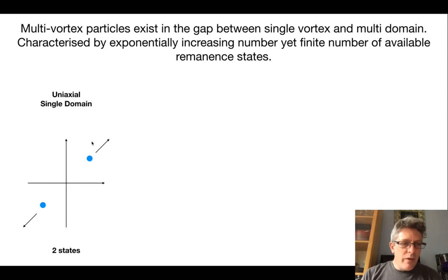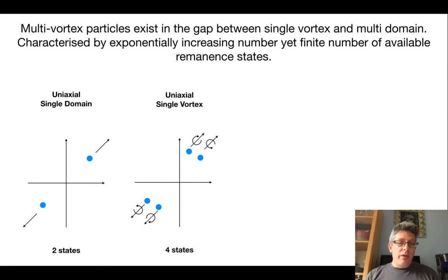In the simplistic case, if we have uniaxial single-domain, there are two remanent states that a particle can adopt, up or down. If we go to a uniaxial single-vortex state, that number of states might increase to four, corresponding to the vortex core pointing up and down, and the volume spins rotating either clockwise or anticlockwise.